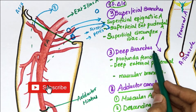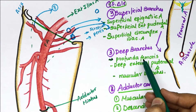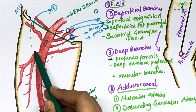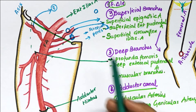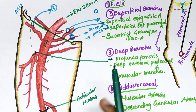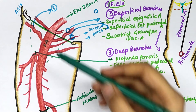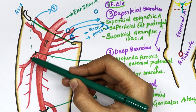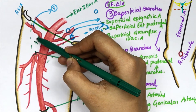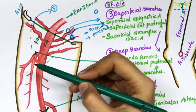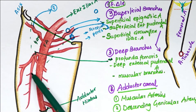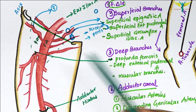The profunda femoris artery, also called the deep femoral artery, is the largest branch of the femoral artery. It is the chief source of blood supply to all the muscles of the three compartments of the thigh. It arises from the lateral side of the femoral artery in the femoral triangle, about four centimeters below the inguinal ligament, and gives muscular branches, the medial circumflex femoral artery, lateral circumflex femoral artery, and perforator arteries.